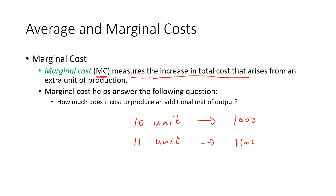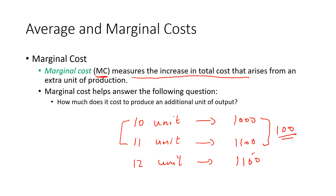Marginal cost is the cost of producing one extra unit. To find the average we divide by the entire quantity, whereas to find the marginal cost we see how much cost changes when we produce one more unit. If producing 12 units costs 1,150, the marginal cost is 50, and the average cost is 1,150 divided by 12.